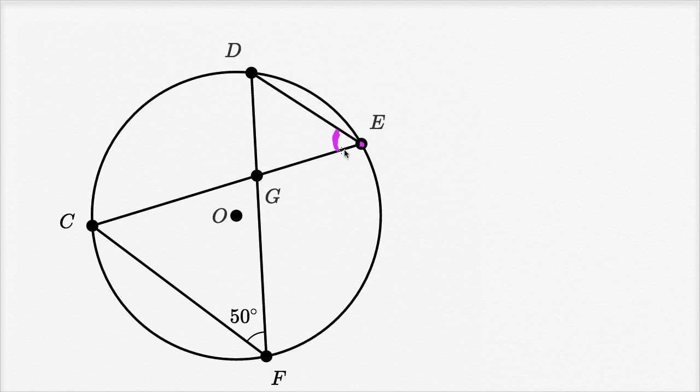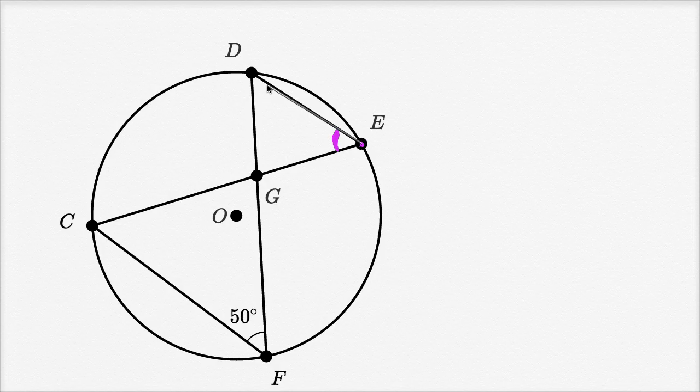And then think about the arc that it intercepts. We see that it intercepts, so let me draw these two sides of the angle. We see that it intercepts arc CD. It intercepts arc CD.